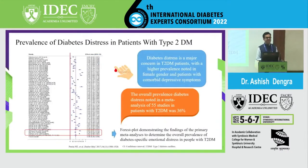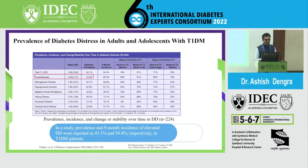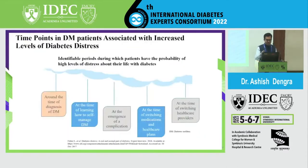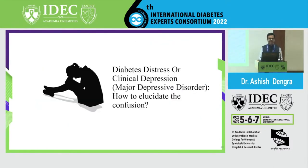The prevalence of diabetes distress is very high, which we neglect in both type 2 and type 1 diabetic patients. It is about 36% overall prevalence of DD. In type 1 diabetic population, the prevalence was 42.1% and incidence was 54.4%. Key time points associated with increased diabetes distress include: at the time of diagnosis, learning how to self-manage, emergence of a complication, switching to insulin or oral therapy, and even switching doctors or healthcare givers.